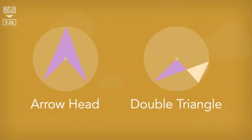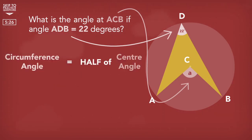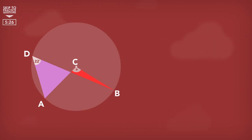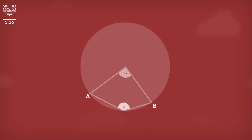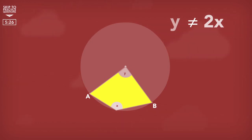For this theorem, either an arrowhead or double triangle shape is always formed. The angles do not change — they stay the same. The only time when this theorem doesn't work is when the point at the circumference goes beyond the two radii line points, no longer forming an arrowhead or double triangle, but a quadrilateral. When that happens, the angle at the circumference isn't equal to half the angle at the center. To find this angle, we would have to use another theorem, covered in theorem number 4.